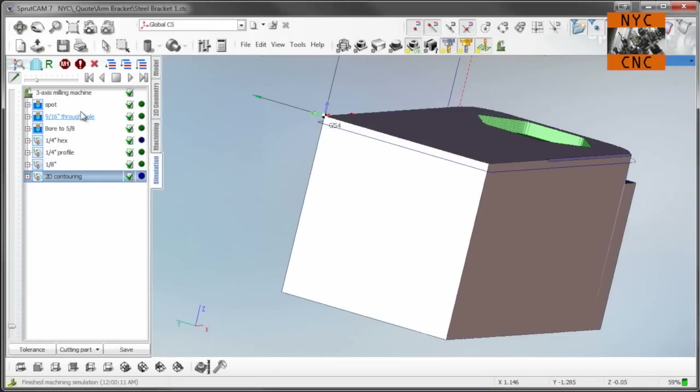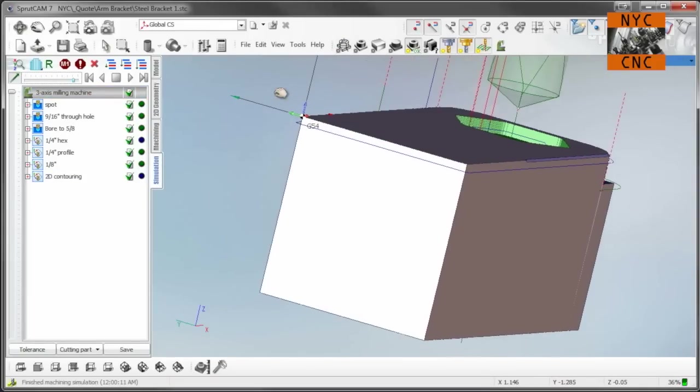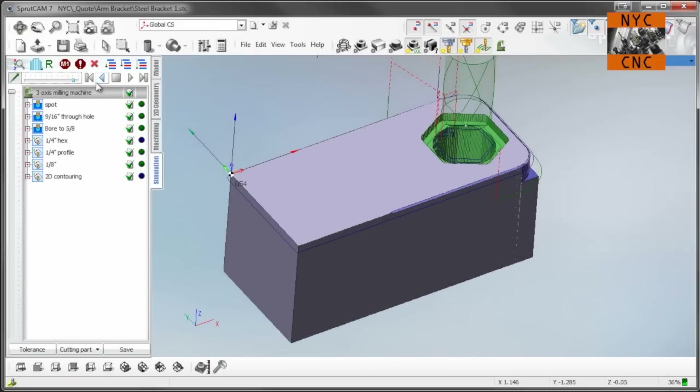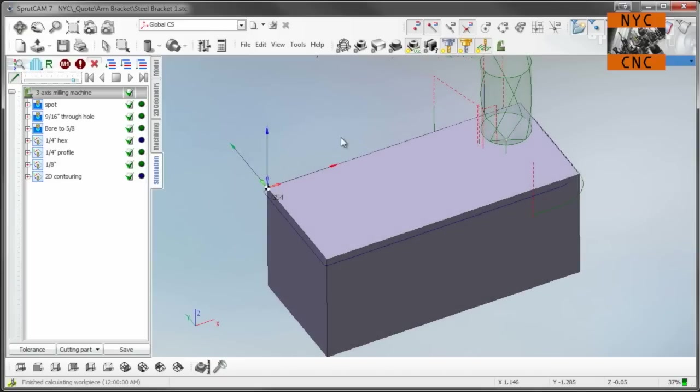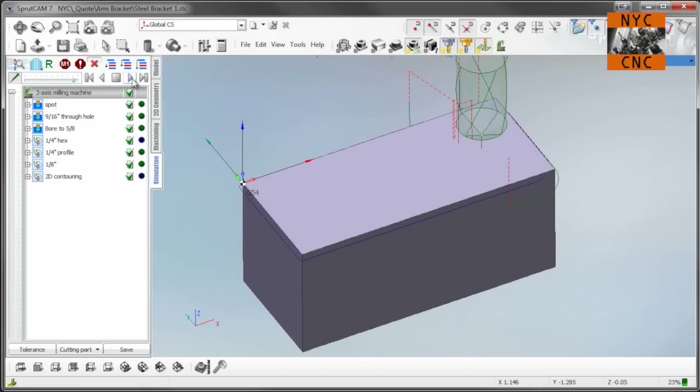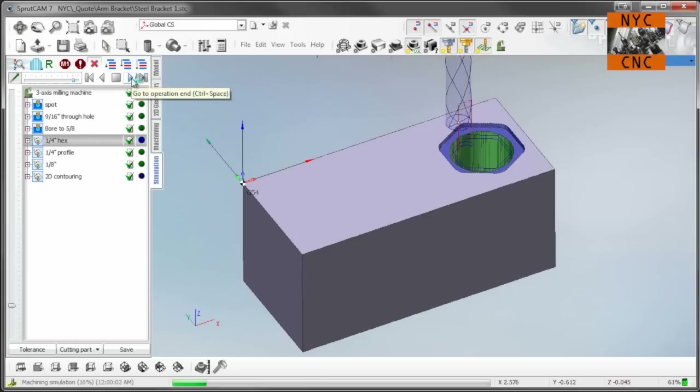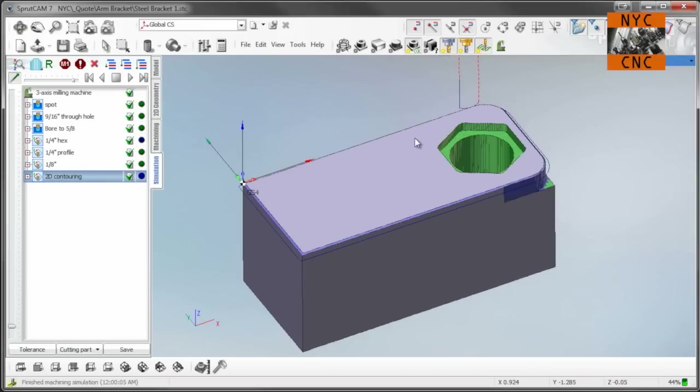So real quick, here we'll show the whole thing in simulation. I really am happy with Sprutcam, and at least it's now very quick for me to efficiently make parts with it in the Tormach. So again, real quick: spot, drill, bore, quarter-inch hex, profile, eighth-inch clean up, and chamfer the outside.